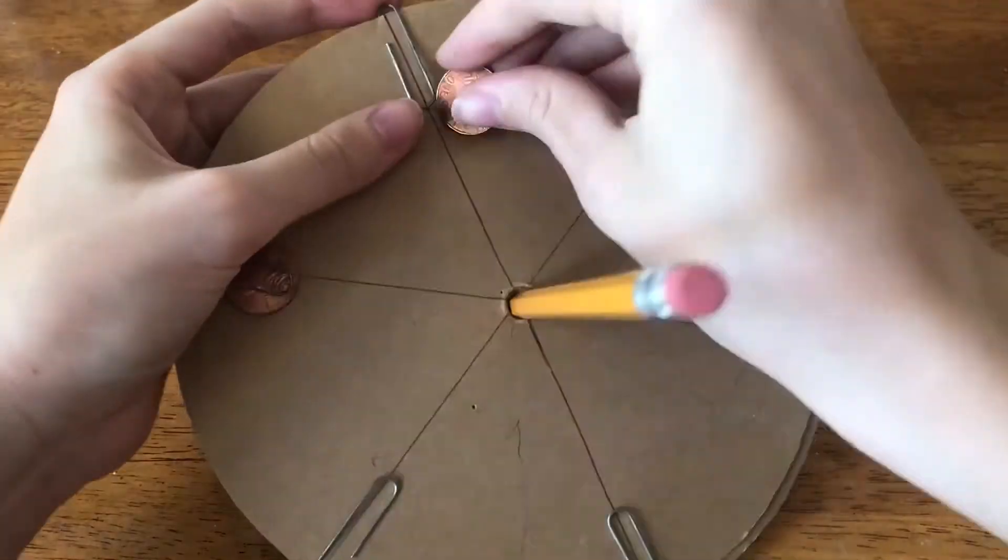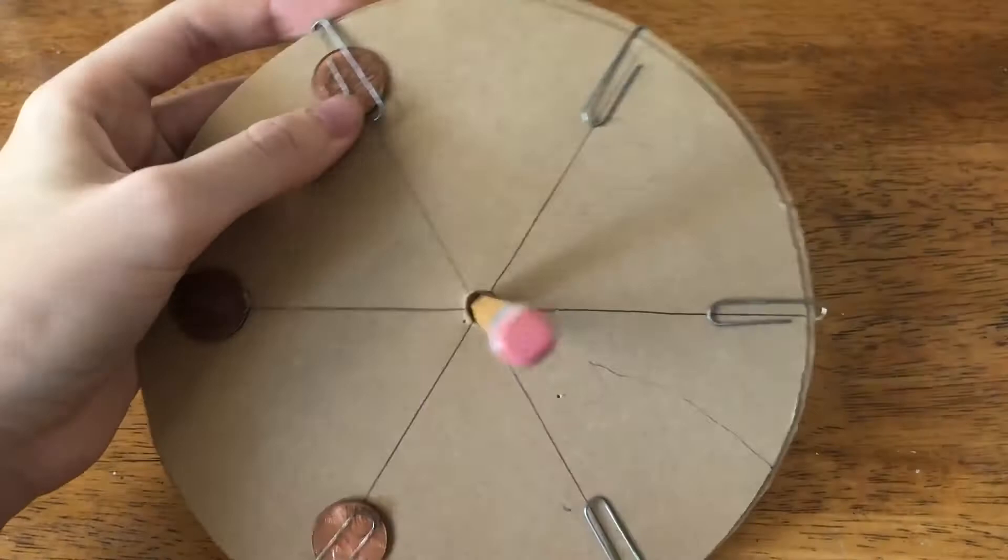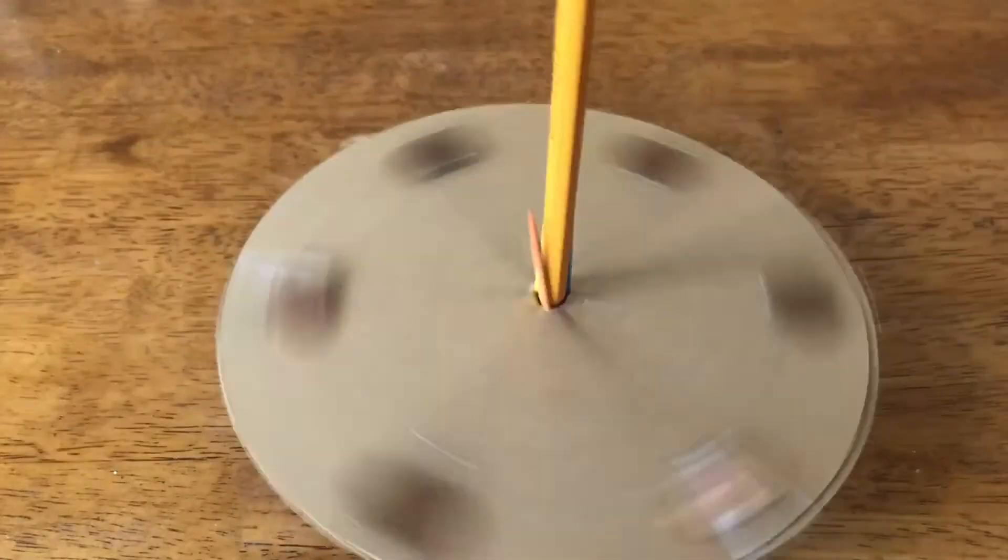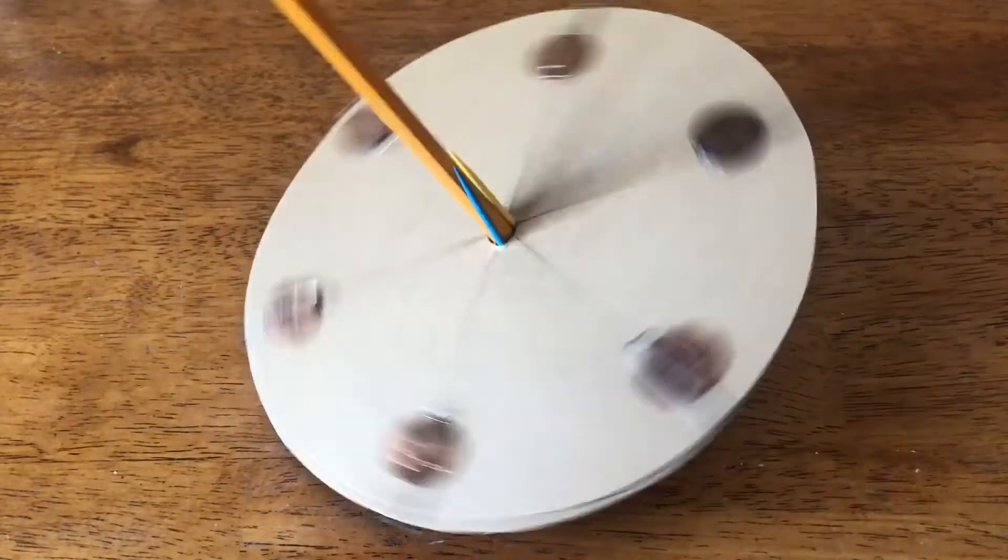Finally, place a penny under each paperclip, sliding the pennies as close to the edge as possible. Have the students try to spin the pencil and note the length of time it continues to spin.